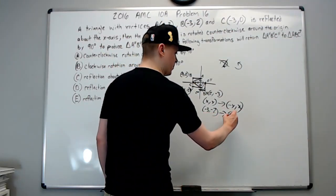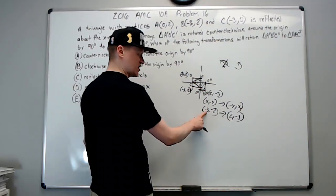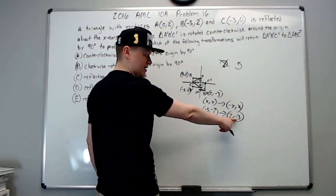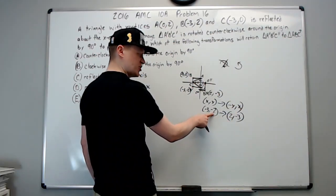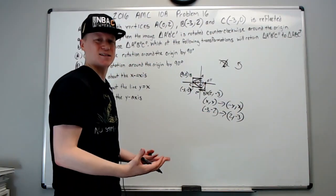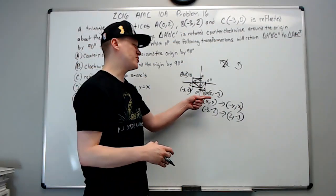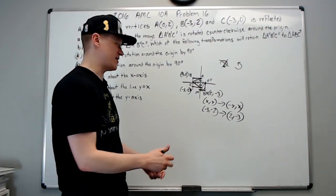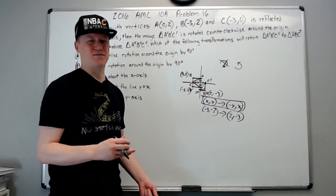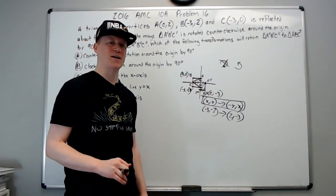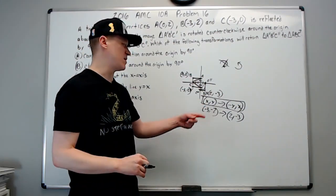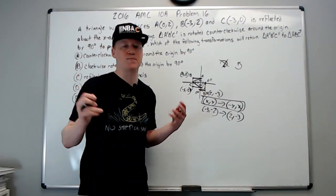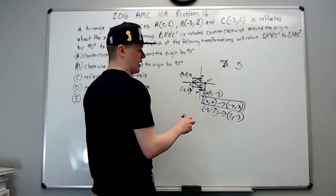So this becomes (2,-3). The x value doesn't change itself, but it becomes the y value with the same sign it was before. However, the original y value becomes the x value but with opposite sign. Again, this is how you can derive what happens with these various operations without memorizing them. If you want, you can memorize this, but for most of us there's so many concepts that we need on the test that choosing to memorize this could take up valuable memory space.